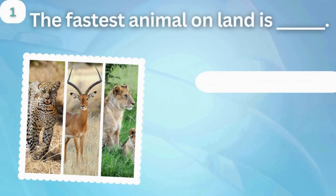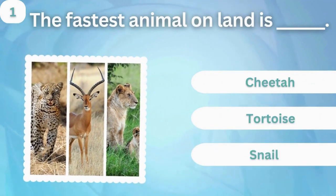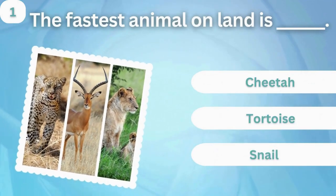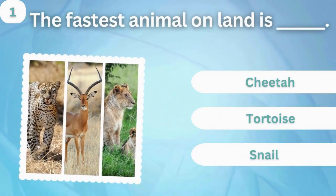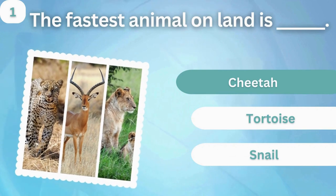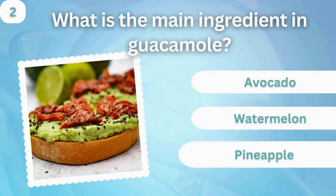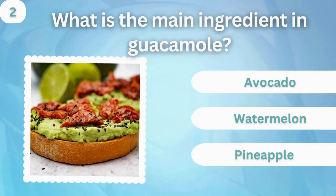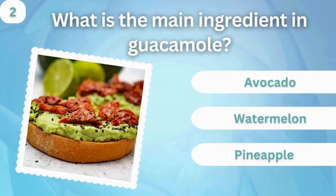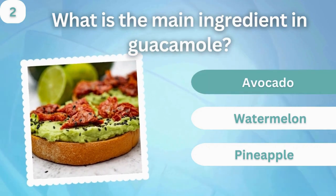The fastest animal on land is: cheetah, tortoise, or snail? Cheetah. What is the main ingredient in guacamole? Avocado, watermelon, or pineapple? Avocado.